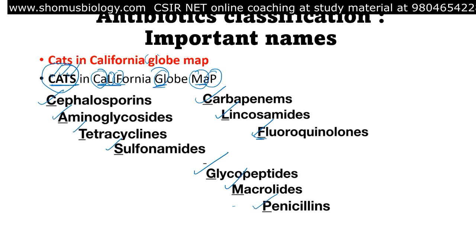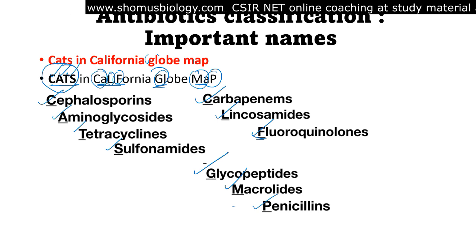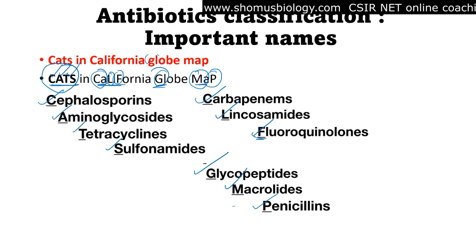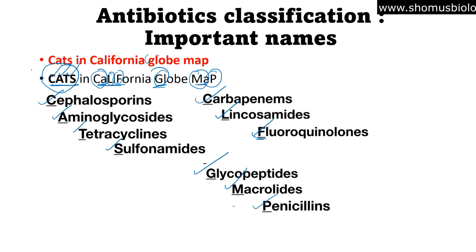That gives us 10 different types of antibiotics: Carbapenems, Lincosamides, Fluoroquinolones, Cephalosporins, Aminoglycosides, Tetracyclines, Sulfonamides, Glycopeptides, Macrolides, and Penicillins. Also remember: it starts with C for Cephalosporins — a beta-lactam antibiotic — and ends with P for Penicillins, another beta-lactam antibiotic. Beta-lactam to begin, beta-lactam to end — that's how you can keep track of all 10 antibiotics.